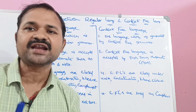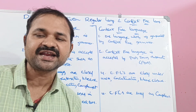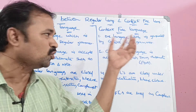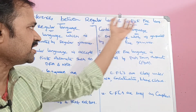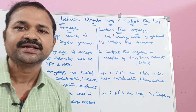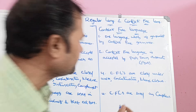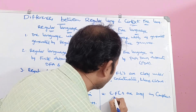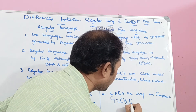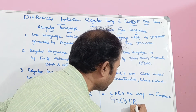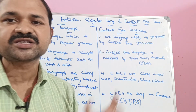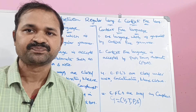In both regular grammar and context-free grammar, the grammar is represented by four tuples: G = (V, T, P, S). Both grammars are represented by these four tuples.